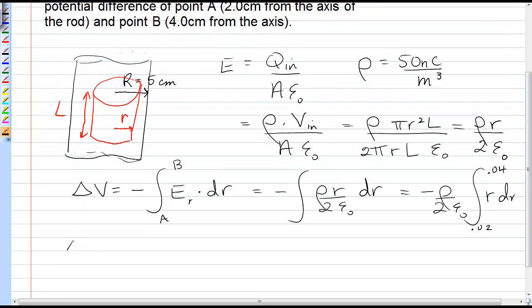So substituting this in, we have the change in voltage, the voltage at B minus the voltage at A would be negative rho over 2 epsilon naught times r squared over 2, evaluated between 0.02 and 0.04.